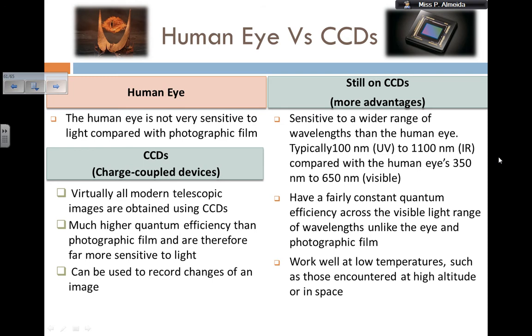The human eye is not very sensitive to light. This is already the case in general — compared with photographic film it is not very sensitive, and comparing with the CCD it is even less sensitive.